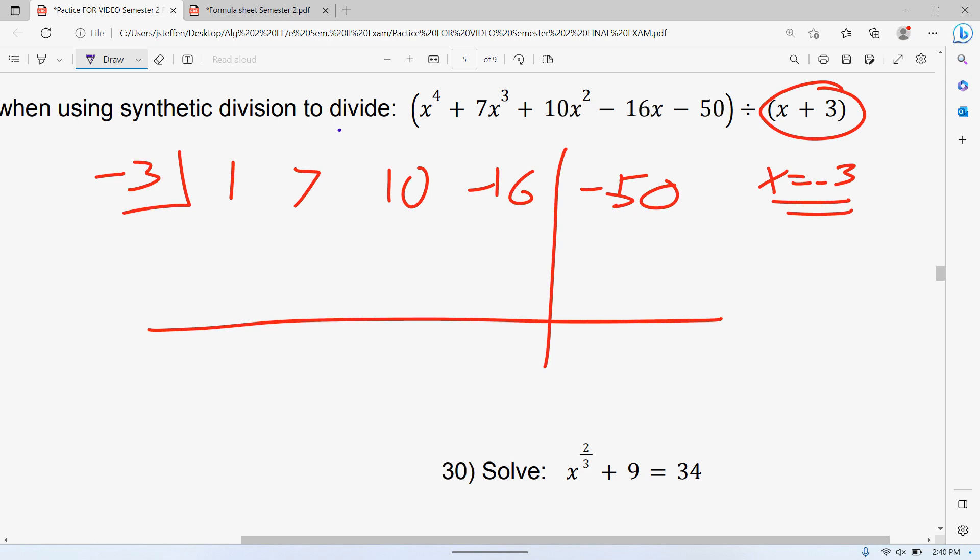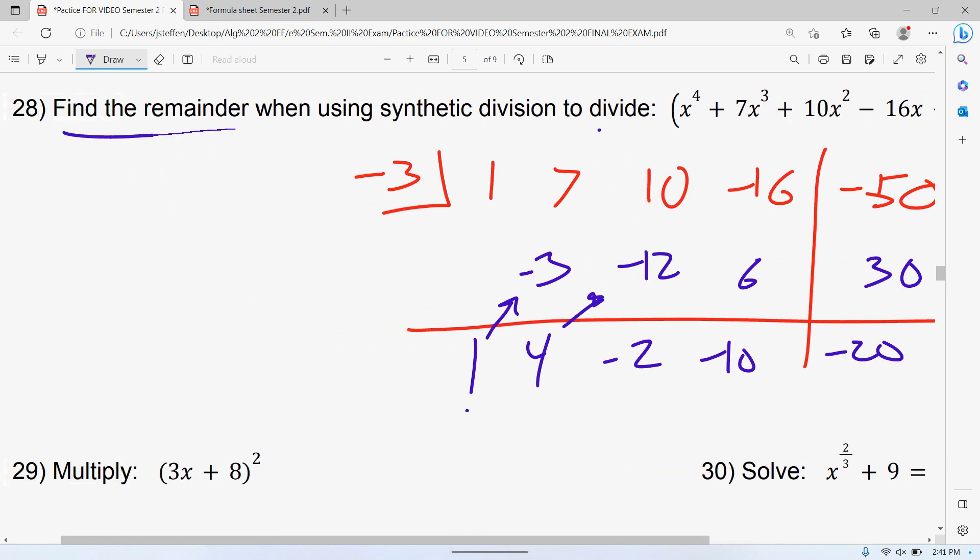Negative 3 times 1 is negative 3. 10 plus negative 3 is 7. Negative 3 times 7 is negative 21. Negative 16 plus negative 21 is negative 37. Negative 3 times negative 37 is positive 111. Negative 60 plus 111 is positive 51. Normally we don't care about the remainder, but this time we do because it specifically says what is the remainder. Find the remainder. So for this one, that answer is just 51.